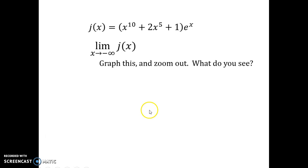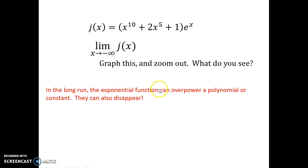Okay, so we graphed it. We zoomed out. And, we saw it's going to 0. So, the reason for that is the exponential function right here can overpower a polynomial or a constant. The exponential functions are much stronger than polynomials. Even if it was of, like, 100 up here,